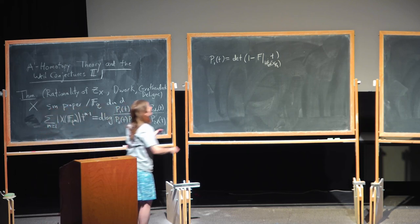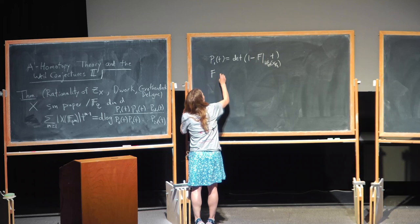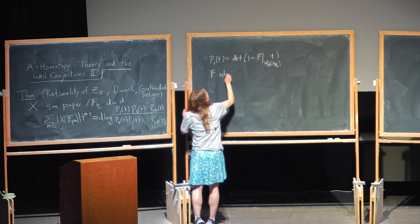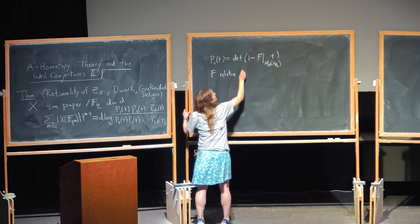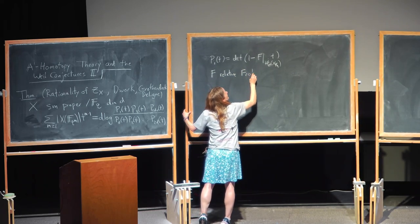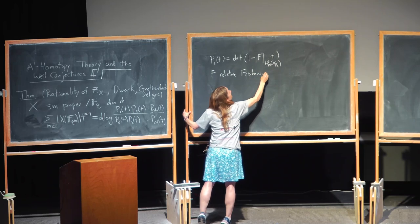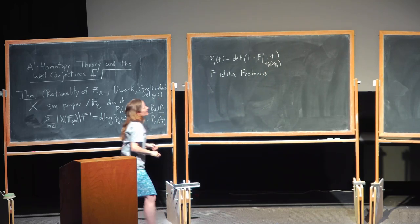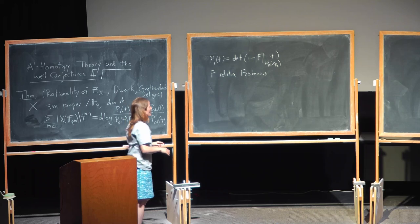Let's recall that F is the relative Frobenius, where — if we've got a projective variety — we raise all of the homogeneous coordinates to their q-th powers.